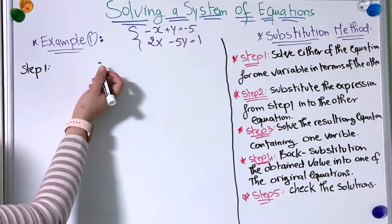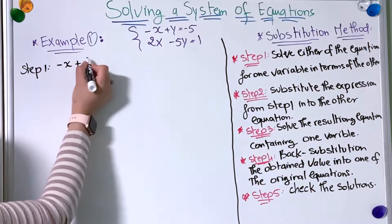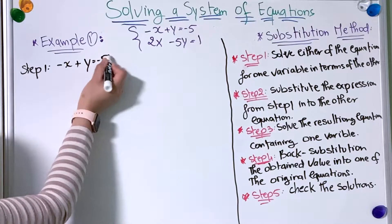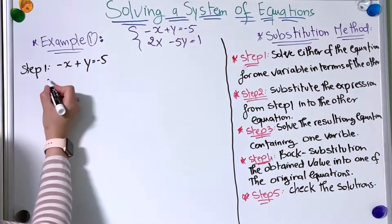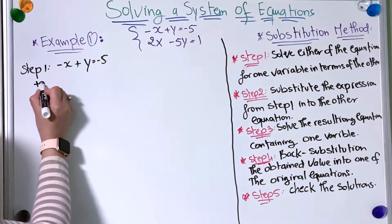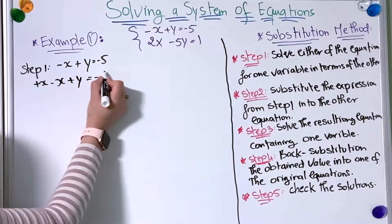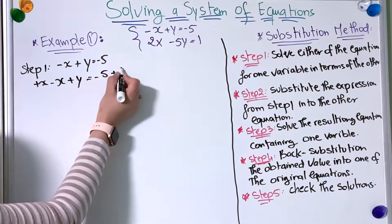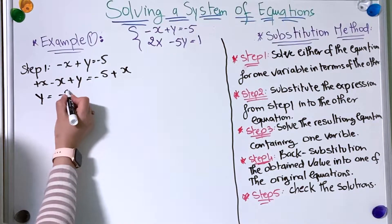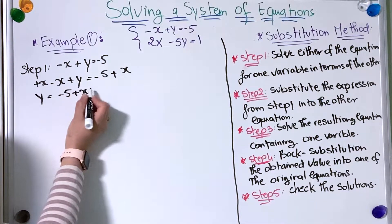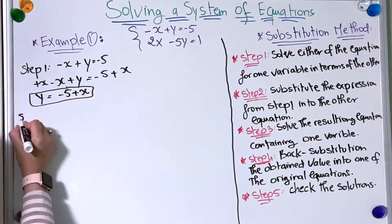I'm going to take the first equation, which is minus x plus y equals minus five, and solve for y. I'm going to add x to both sides: minus x plus y plus x equals minus five plus x, so y equals minus five plus x. Now I have found the expression.